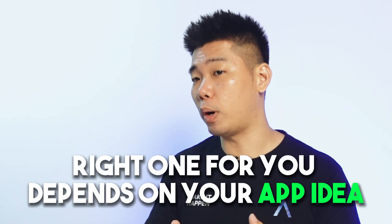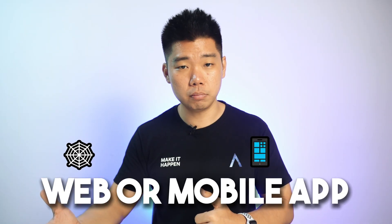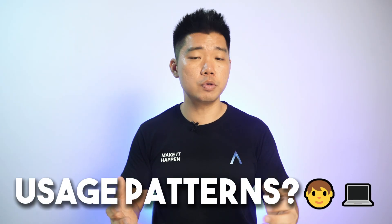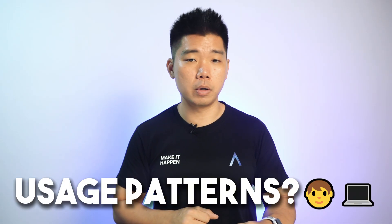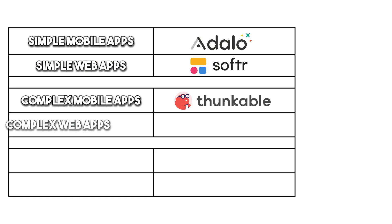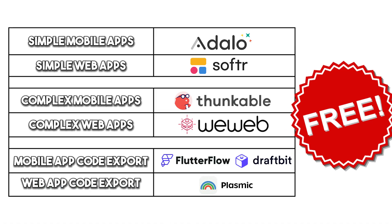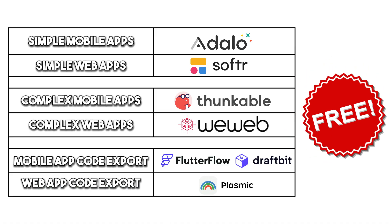There's no perfect builder. There's the right one for you depending on your idea. Is it a simple or complex app? Is it a web or mobile application? Or both? What about usage patterns? Will people use it for two minutes every day or a few hours once a week? Do you want the option of exporting the code? A few app builders offer that. Without knowing your requirements, I can only give general recommendations. For simple mobile apps: Adalo. For simple web apps: Softr. For complex mobile apps: Thunkable. For complex web applications: WeWeb. For mobile app code export: Flutterflow or Dropbit. For web app code export: Plasmic. All have free plans so you can learn the platform and build and validate your app for free.